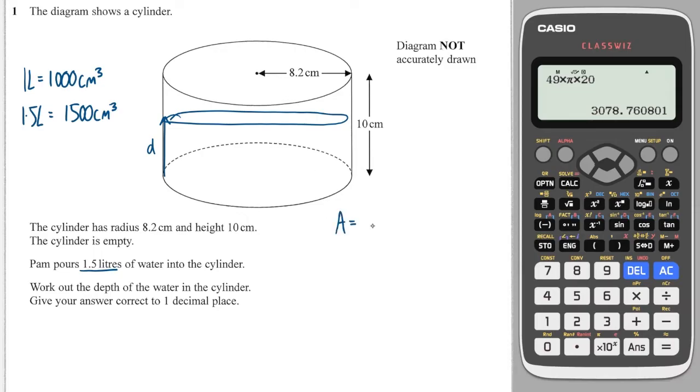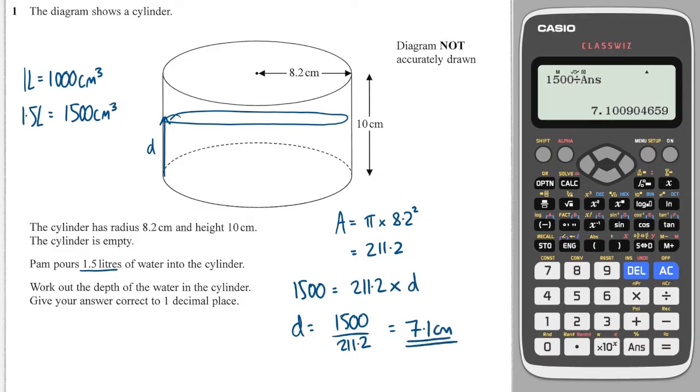The base area, or the cross sectional area, is going to be π multiplied by the radius squared, which we could do on our calculator, π times 8.2 squared. And then that will be multiplied by however high up the water rises to. We want it to rise so that the volume is exactly 1500. So the depth is equal to 1500 divided by the cross sectional area. So I do 1500 divided by the answer, and I get 7.1 centimetres to one decimal place. Tricky question for a question 1, that.